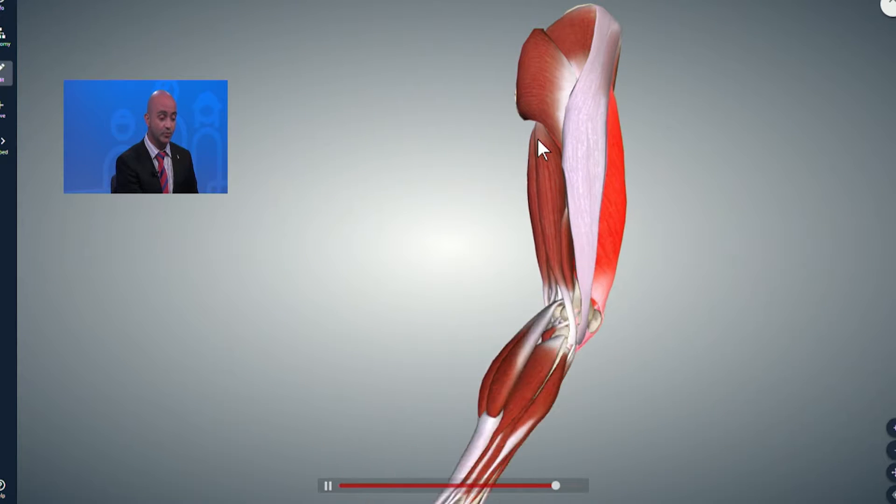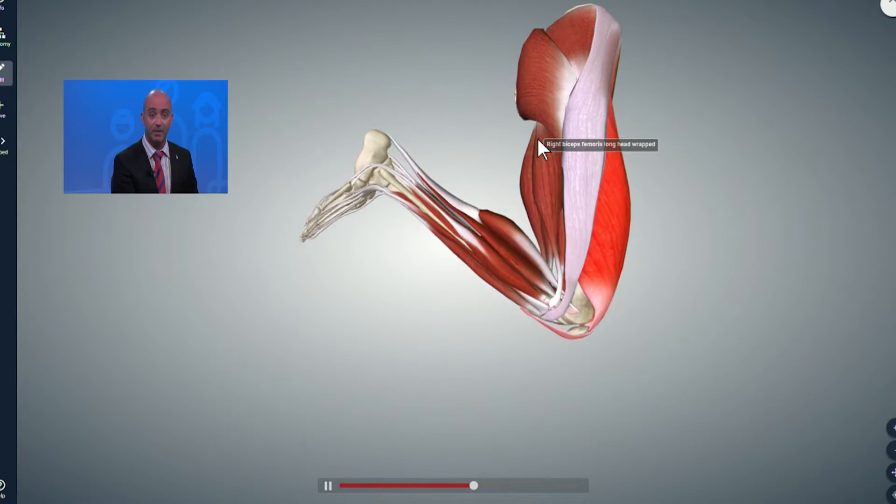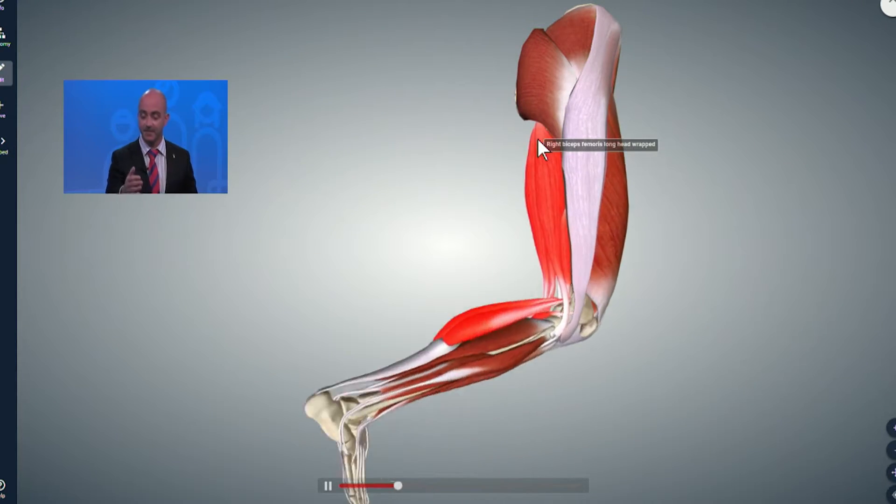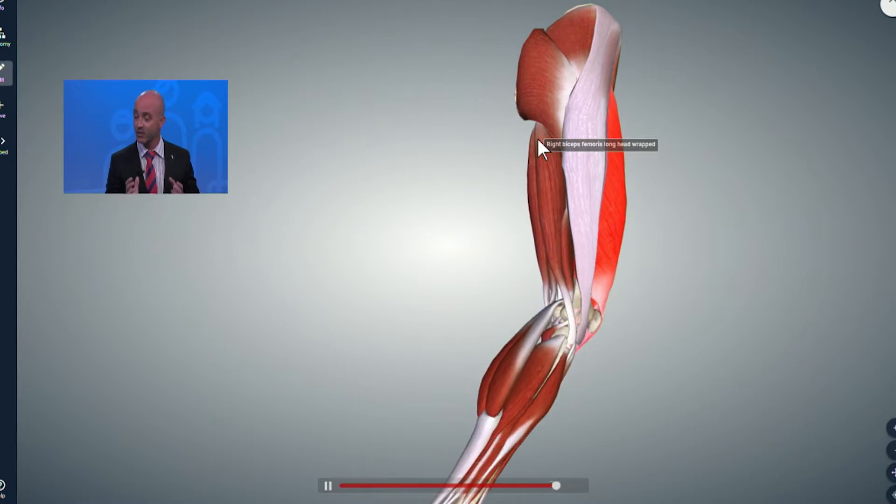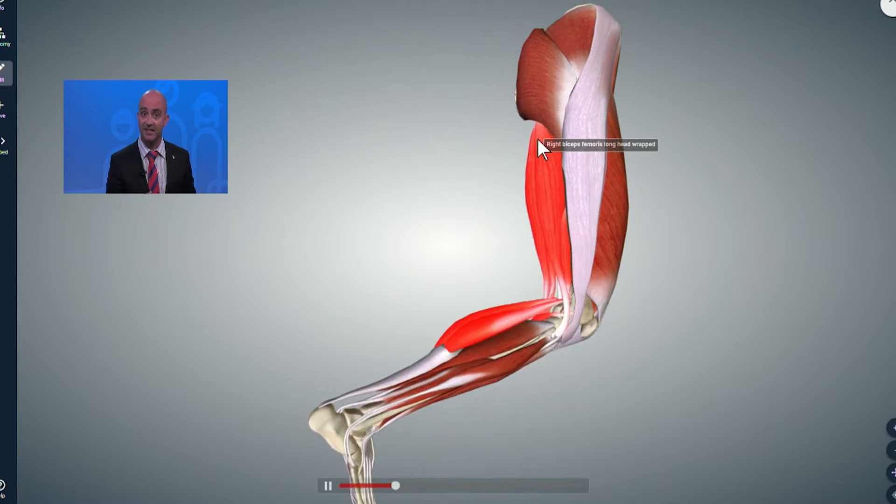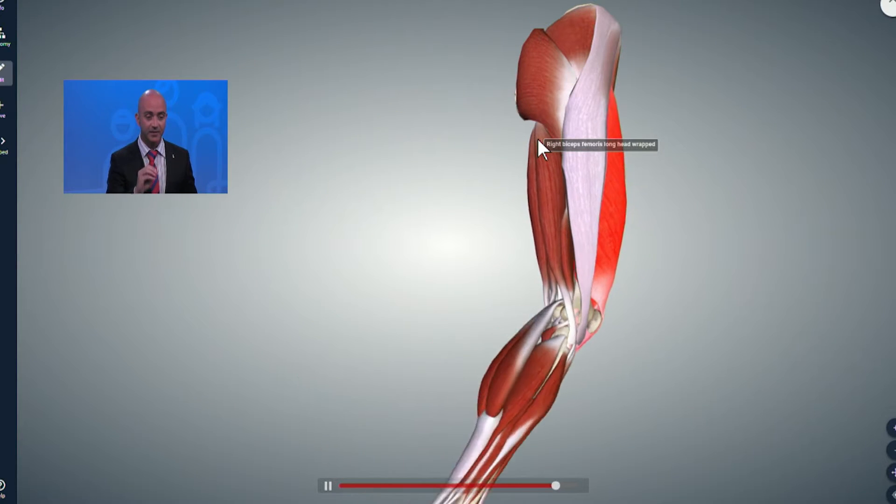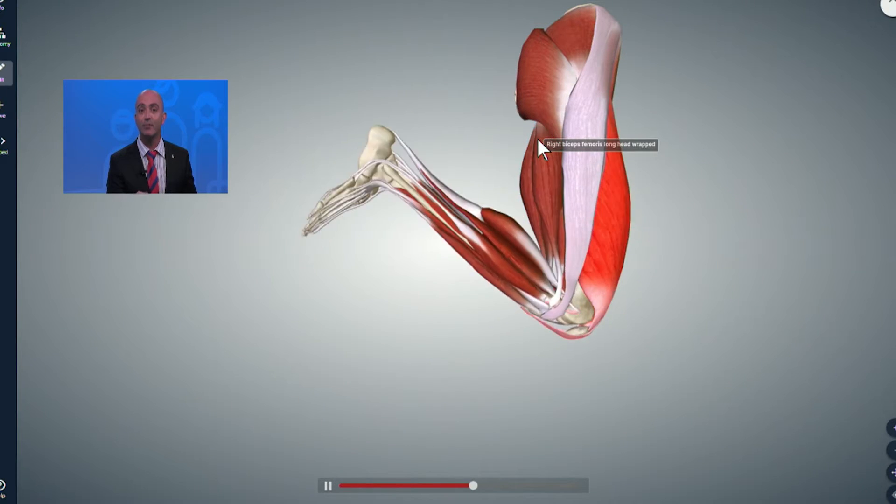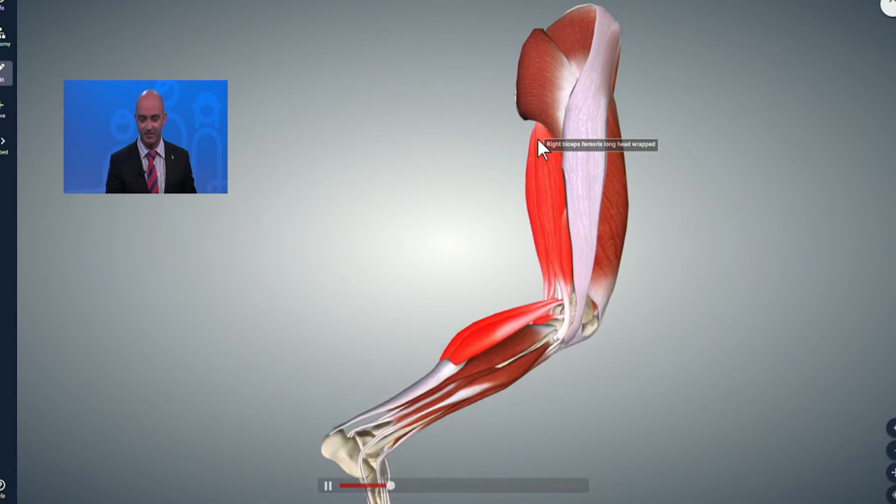As it goes off the bone, you have what's called a myotendinous junction, where the tendon is starting to end and the real muscle belly is starting to begin. That's actually probably one of the more common places to injure because the stiffness of the fibers and the softness of the muscle itself gives it a weakness in the system, so that's an area where it can be hurt.